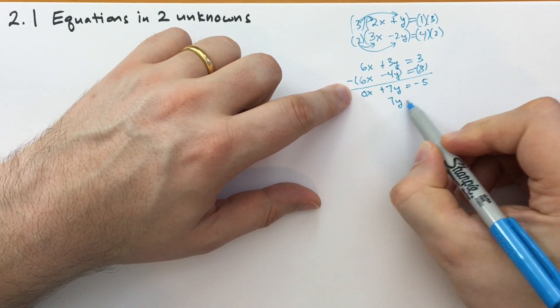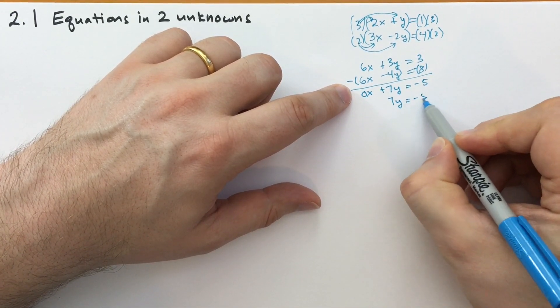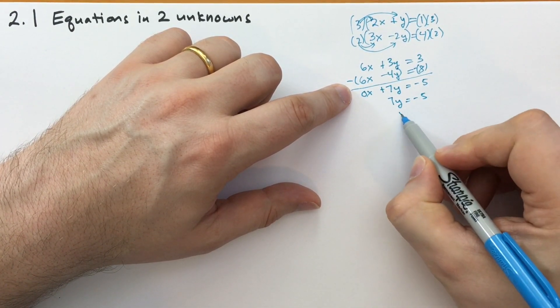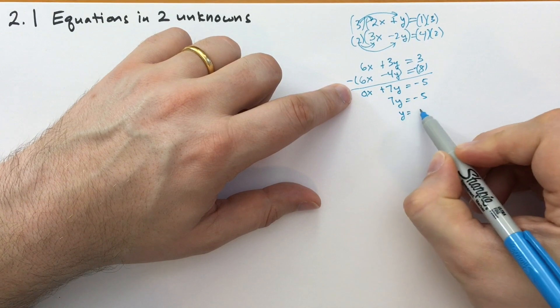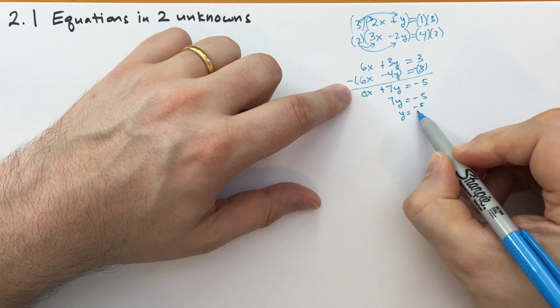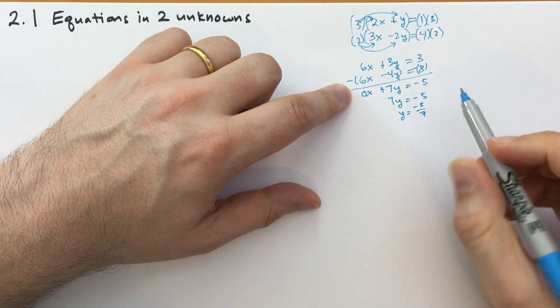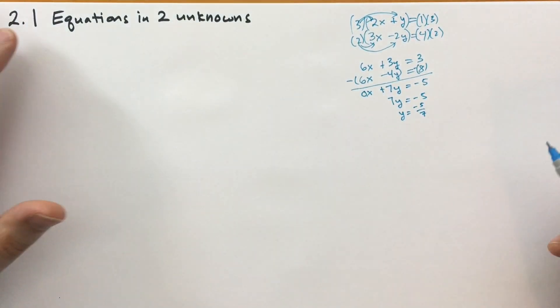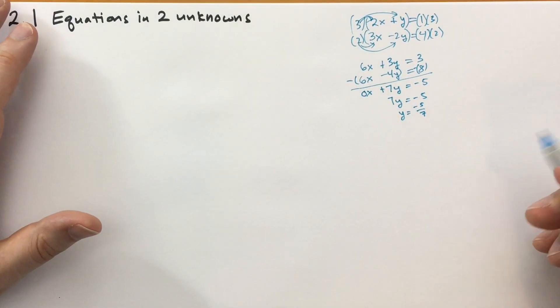Simplifying, we get 7y is equal to minus 5. Moving the 7 to the other side, we get y is equal to minus 5 sevenths.